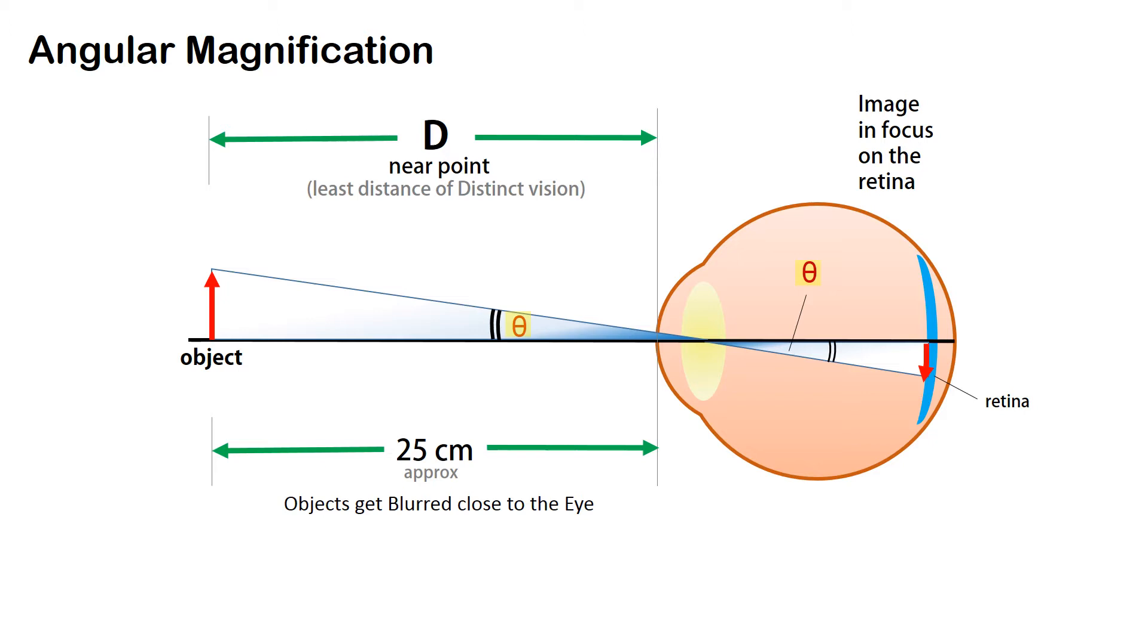It has a near point or least distance of distinct vision which is about 25 cm. If we get the object closer than this 25 cm to the eye, the object starts to get blurred and we don't see it clearly.